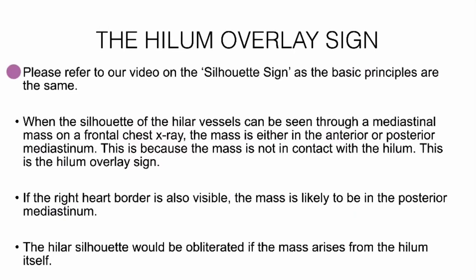As covered in the previous video on the silhouette sign, the basic principles are the same. When the silhouette of the hilar vessels can be seen through a mediastinal mass on the frontal chest X-ray, the mass is likely to be in either the anterior or posterior mediastinum because it is not in contact with the hilum. This is the hilum overlay sign.